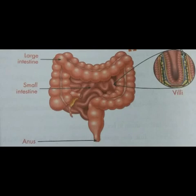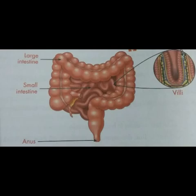Then comes the large intestine, a 5-feet-long tube-like structure. The undigested food from the small intestine is passed to the large intestine, which then absorbs excess water from the undigested food and forms waste called faeces. The faeces are stored in the rectum and then expelled from the body through the anus.